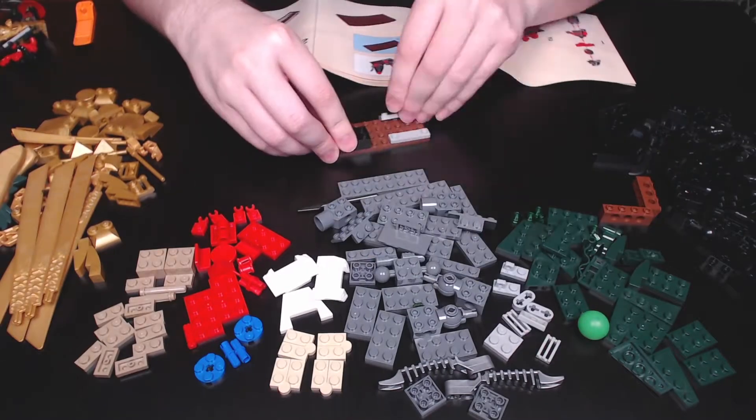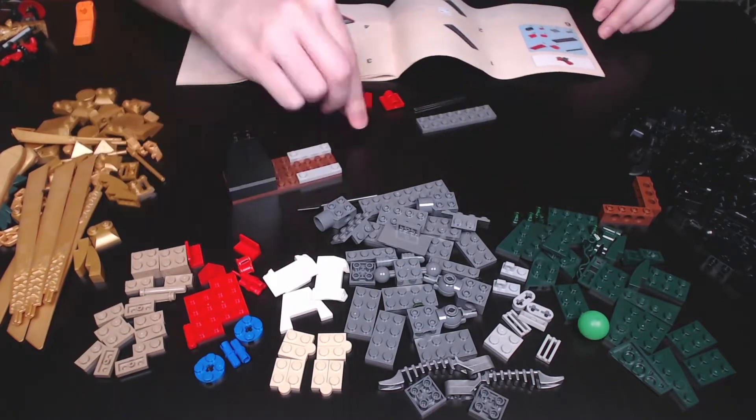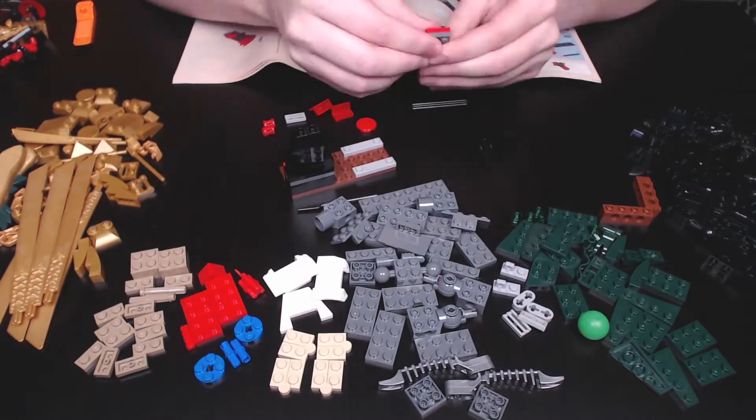For today's LEGO Ninjago speed build video, we're looking at set number 70503, otherwise known as the Golden Dragon.